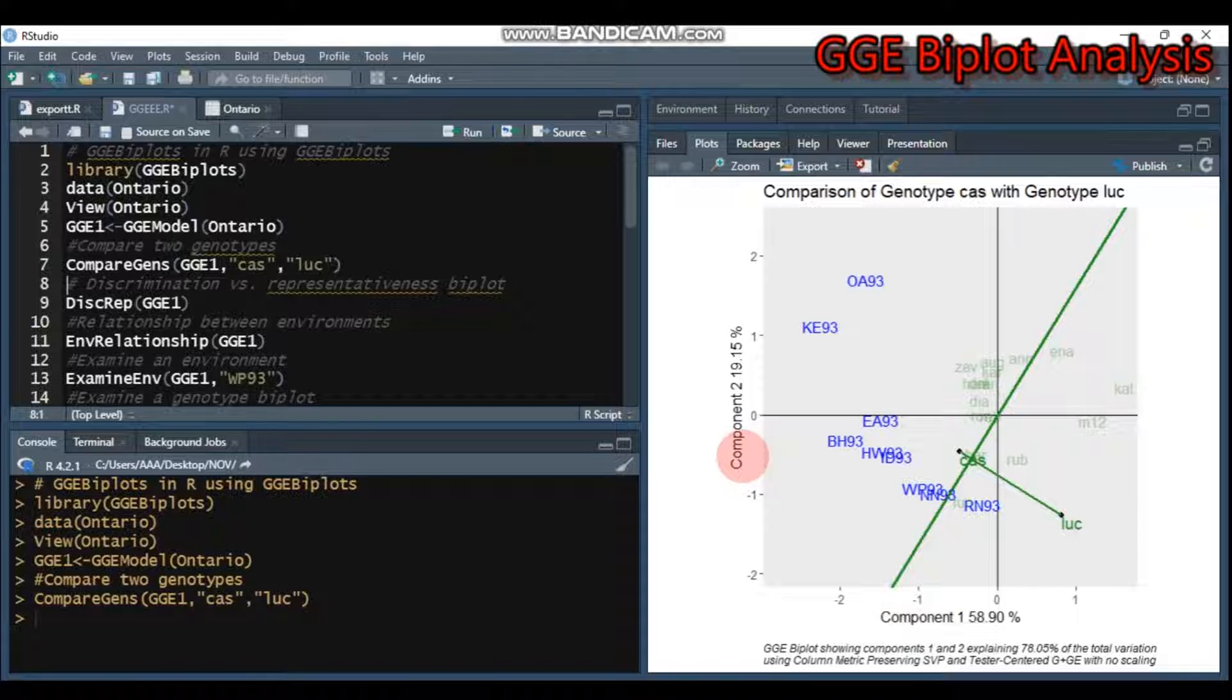CAST as well as LUC are displayed this way. It also gives you detailed information. For example, if we add 58.9 plus 19.15, the total accumulation is around 78.05%, which is good.